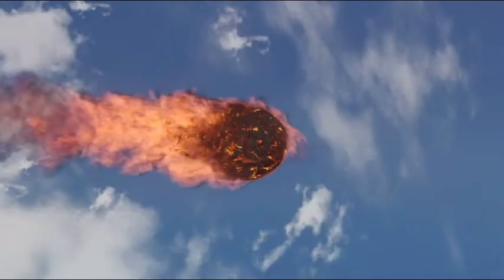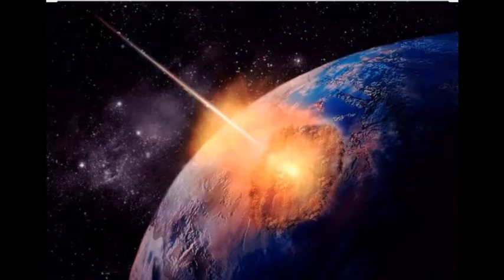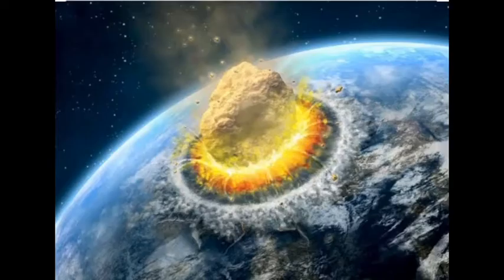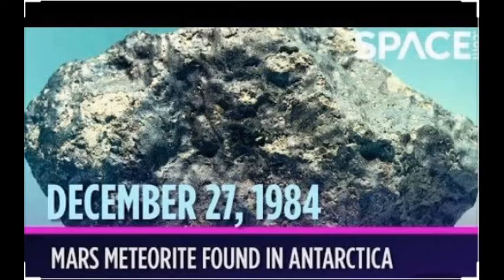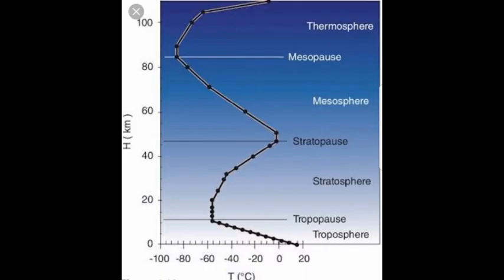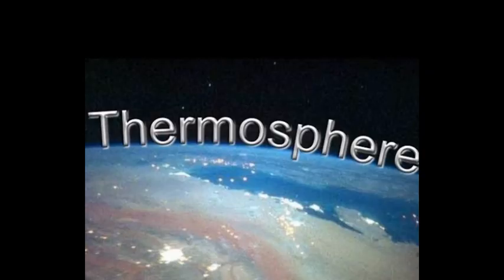Meteors which come from outer space burn up in the mesosphere. When a meteor falls from outer space and reaches the atmosphere, it burns up. If some part is left, the remaining piece that falls down to the Earth's surface is called a meteorite. Metals present in some meteorites include iron and nickel. The mesopause separates the mesosphere and the thermosphere.